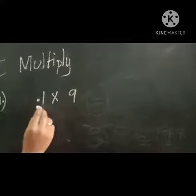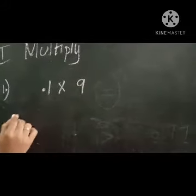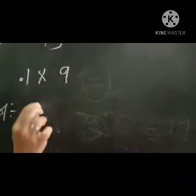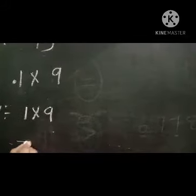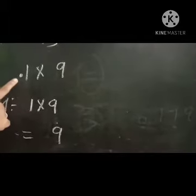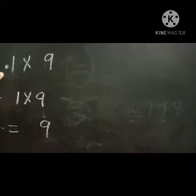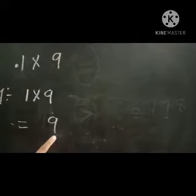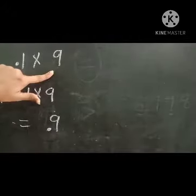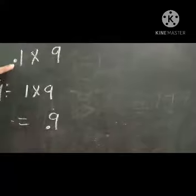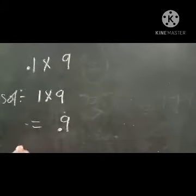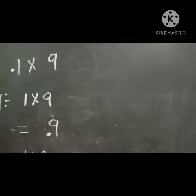Here, the second example: 0.1 into 9. We have to remove the point. So 1 into 9 — 1 nine is 9. The point is in front of 1. How many numbers are there after the point? Only one number. In front of the 9 we have to keep the point. So 0.1 into 9 equals to 0.9.